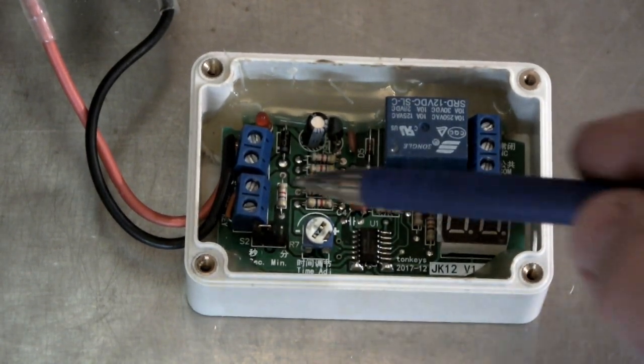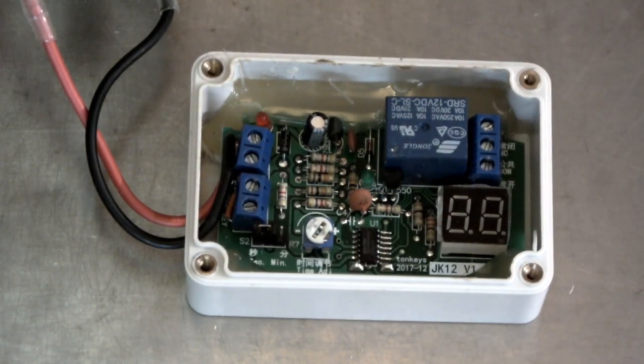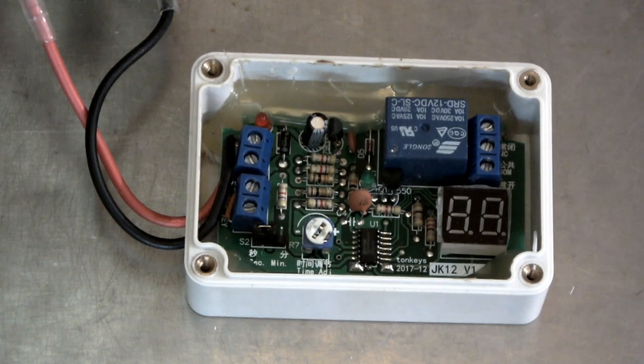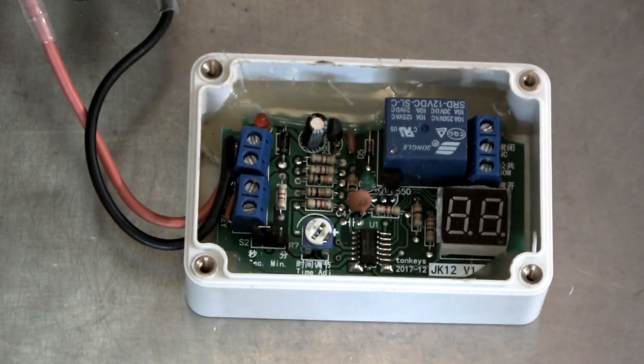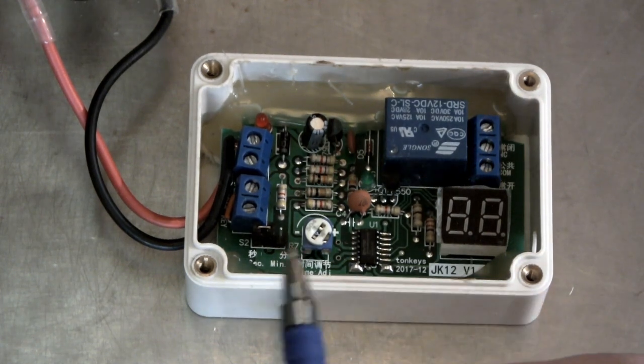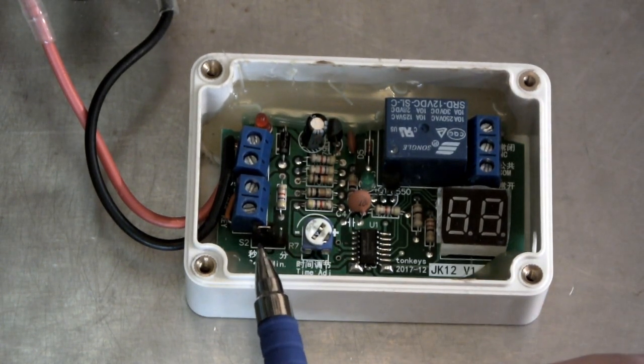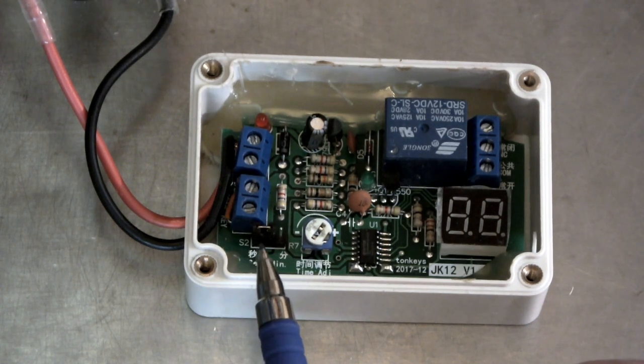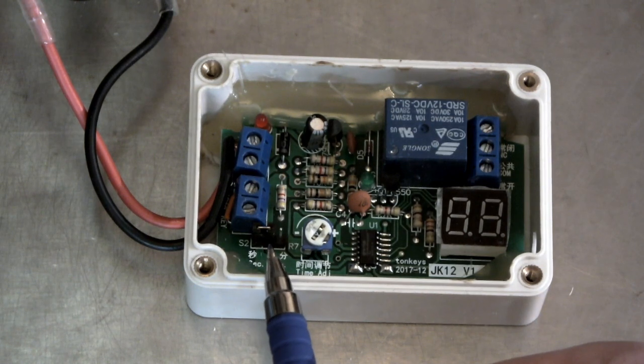These two here, the key if you remember we were talking about the key, they're joined together. I've got just a little piece of wire joining those together. It's that little orange piece, you can just about see it on the camera. The key is now held in permanently. So the second you put power onto this board, it will start counting down. Simple as that.